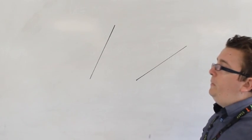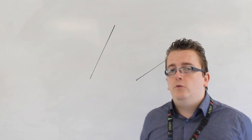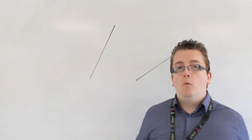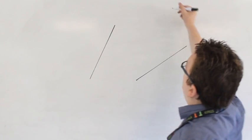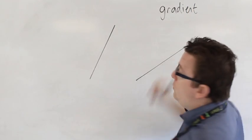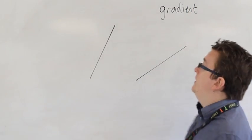So there must be some measure of steepness that we can use to compare them numerically. That's really what we want to do, and so what we look at is the gradient of the lines, which is effectively meaning the steepness - how steep the line is.